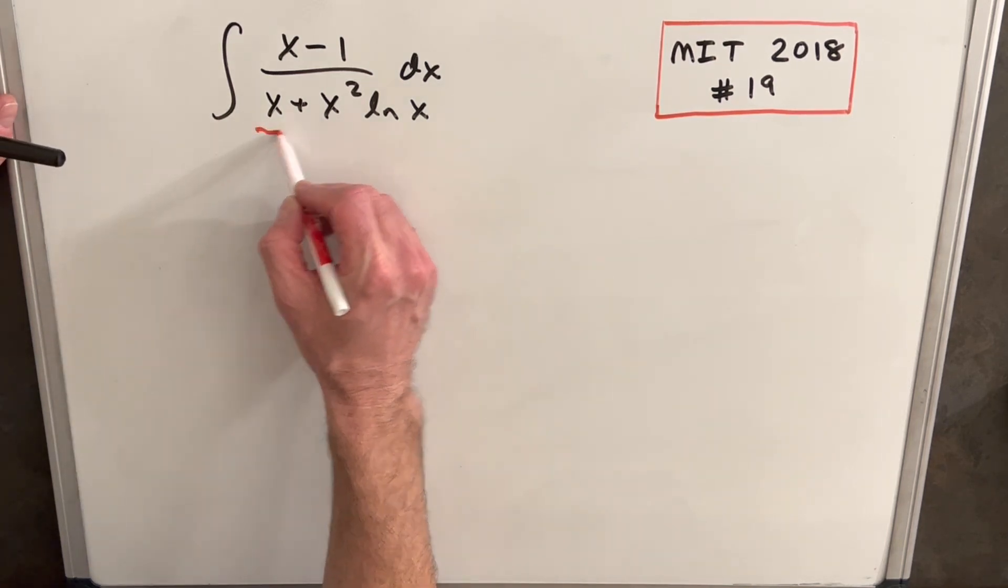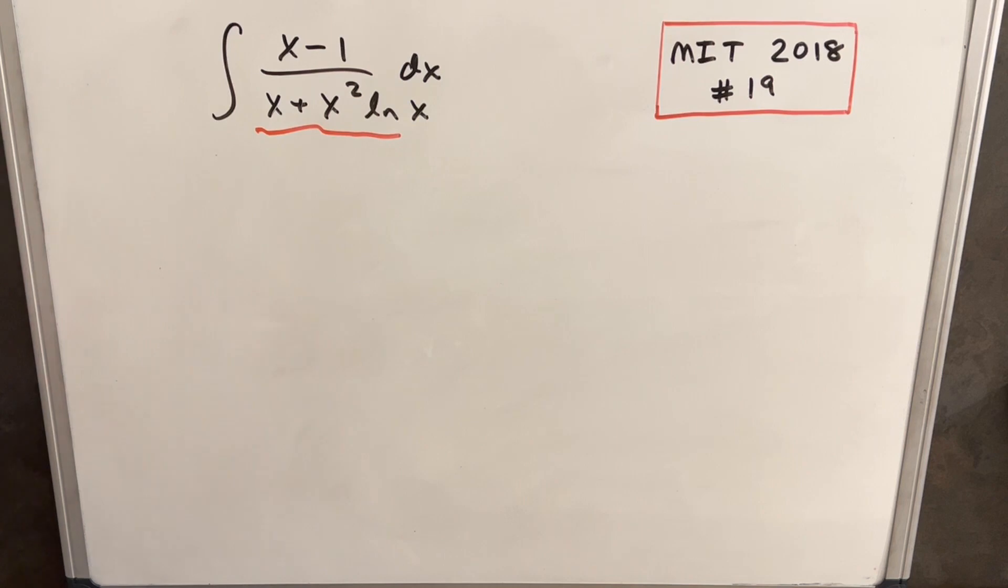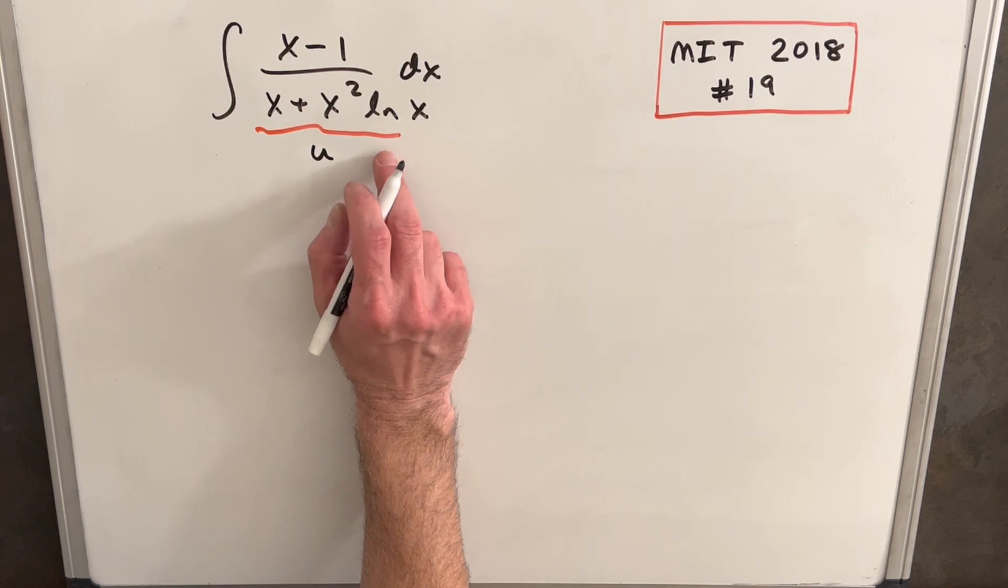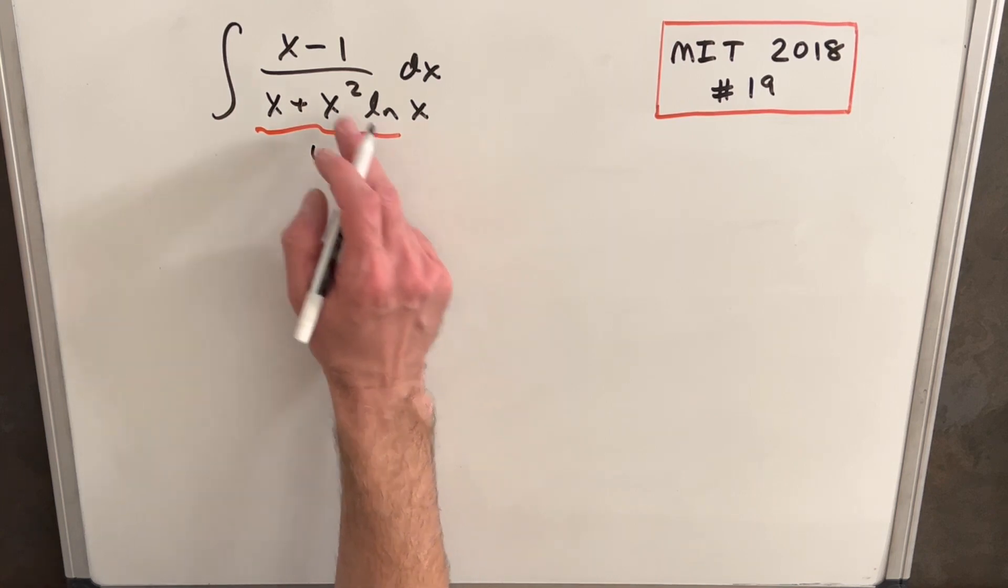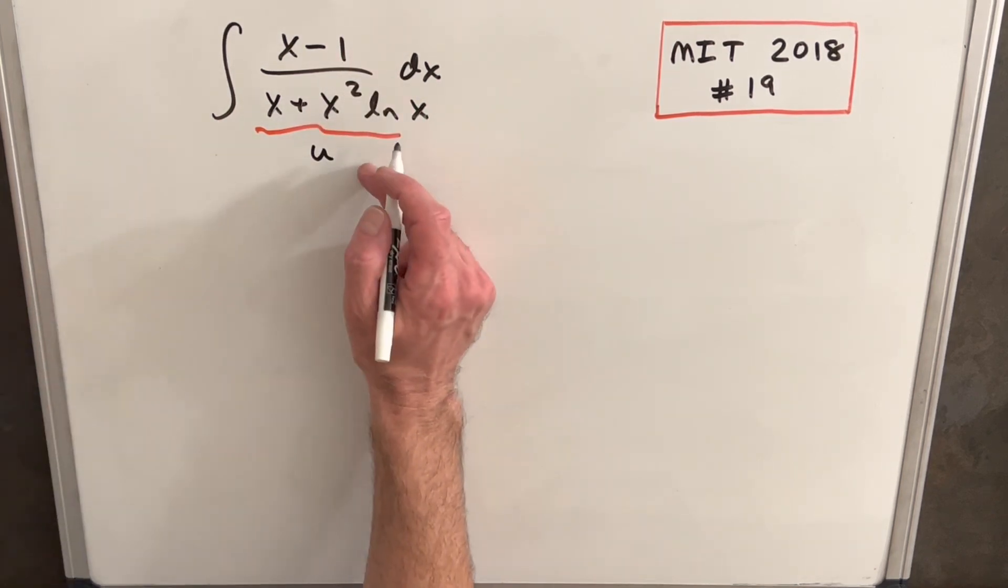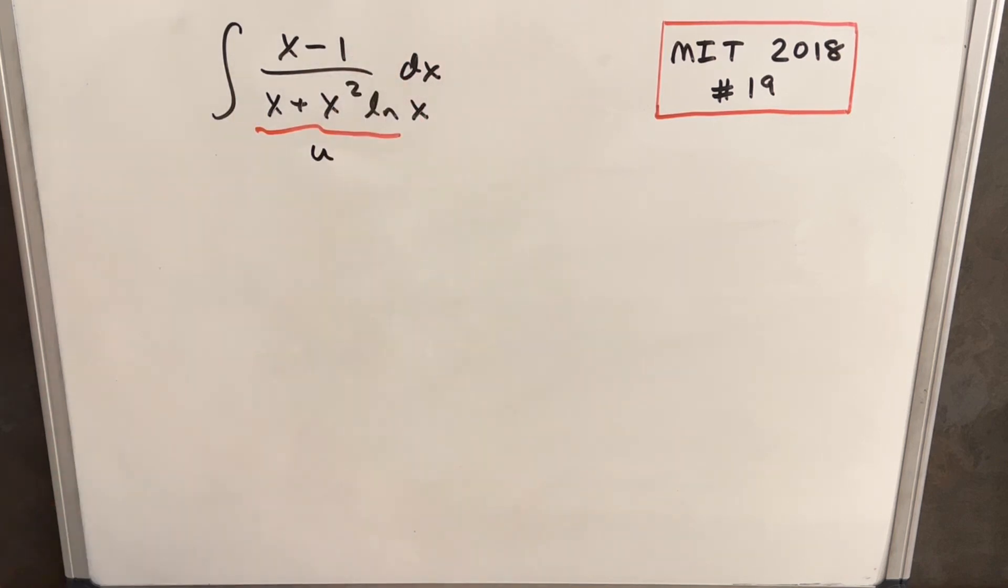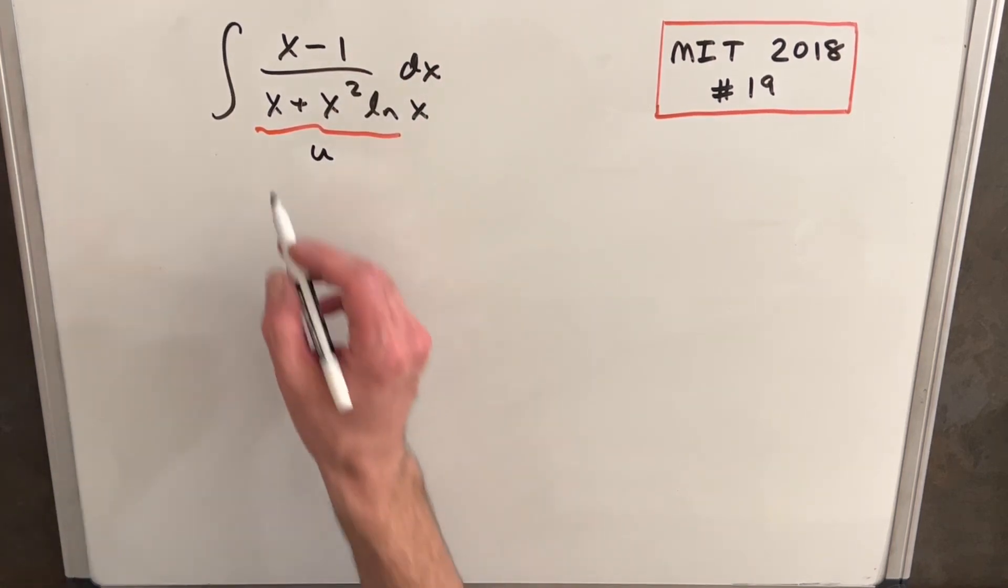They like to do this kind of thing a lot where you have x and ln(x), and you get the feeling there's a derivative there somewhere, like there's a u-substitution, but you can't quite see it. Clearly this can't be our u. If we were to use the whole denominator, we just don't have ln(x) in the numerator. It's not going to work. When we take this derivative, it's not going to be x-1.